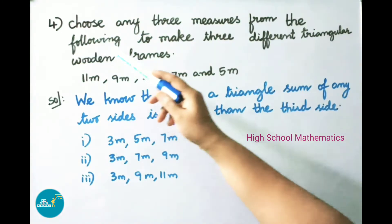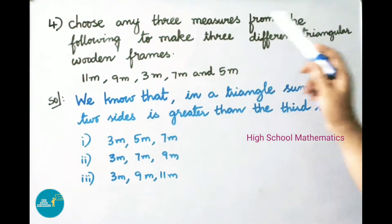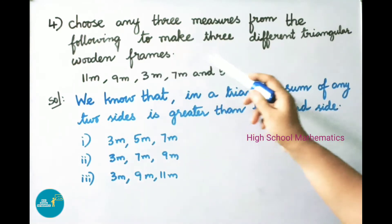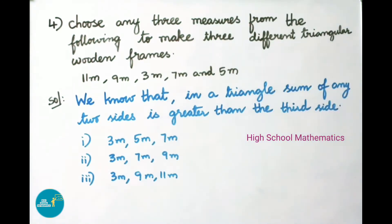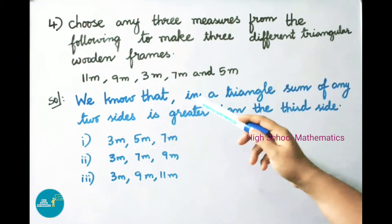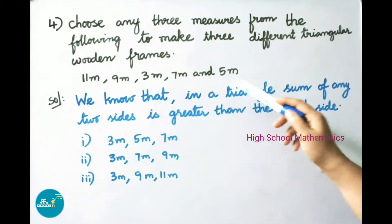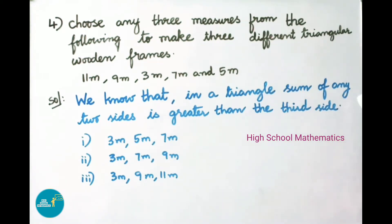Question number four: choose any three measures from the following to make three different triangular wooden frames — 11 meters, 9 meters, 3 meters, 7 meters, and 5 meters. Solution: we know that in a triangle the sum of any two sides is greater than the third side.